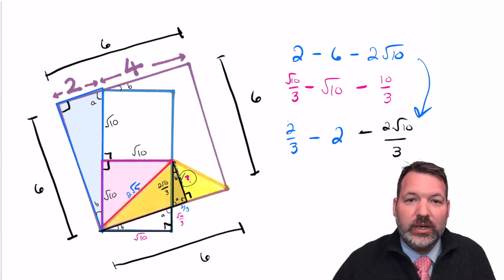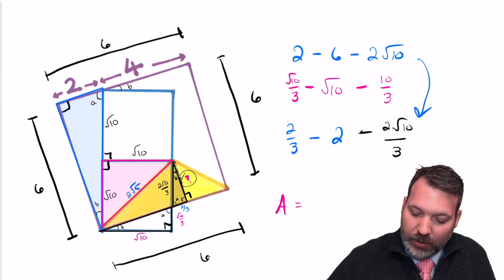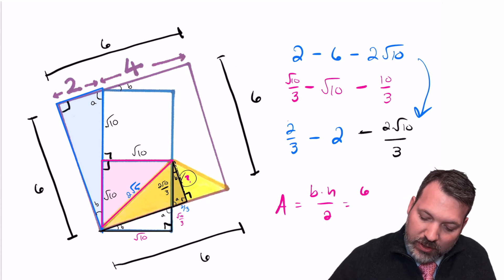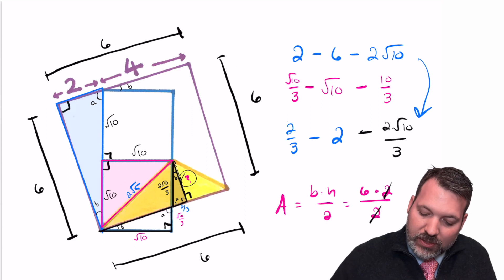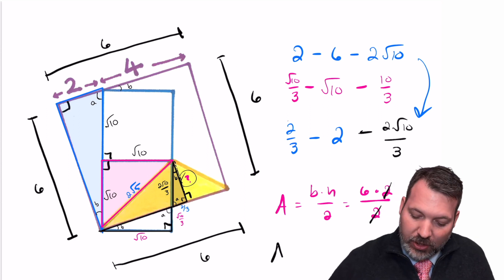And now we have everything we need to compute that yellow shaded region. Area of a triangle, again, base times height divided by 2. We knew the base was 6 from early on. We just figured out the height was 2. When we divide by 2, that'll make for some nice cancellation. And there it is. The area of the yellow shaded region is 6.